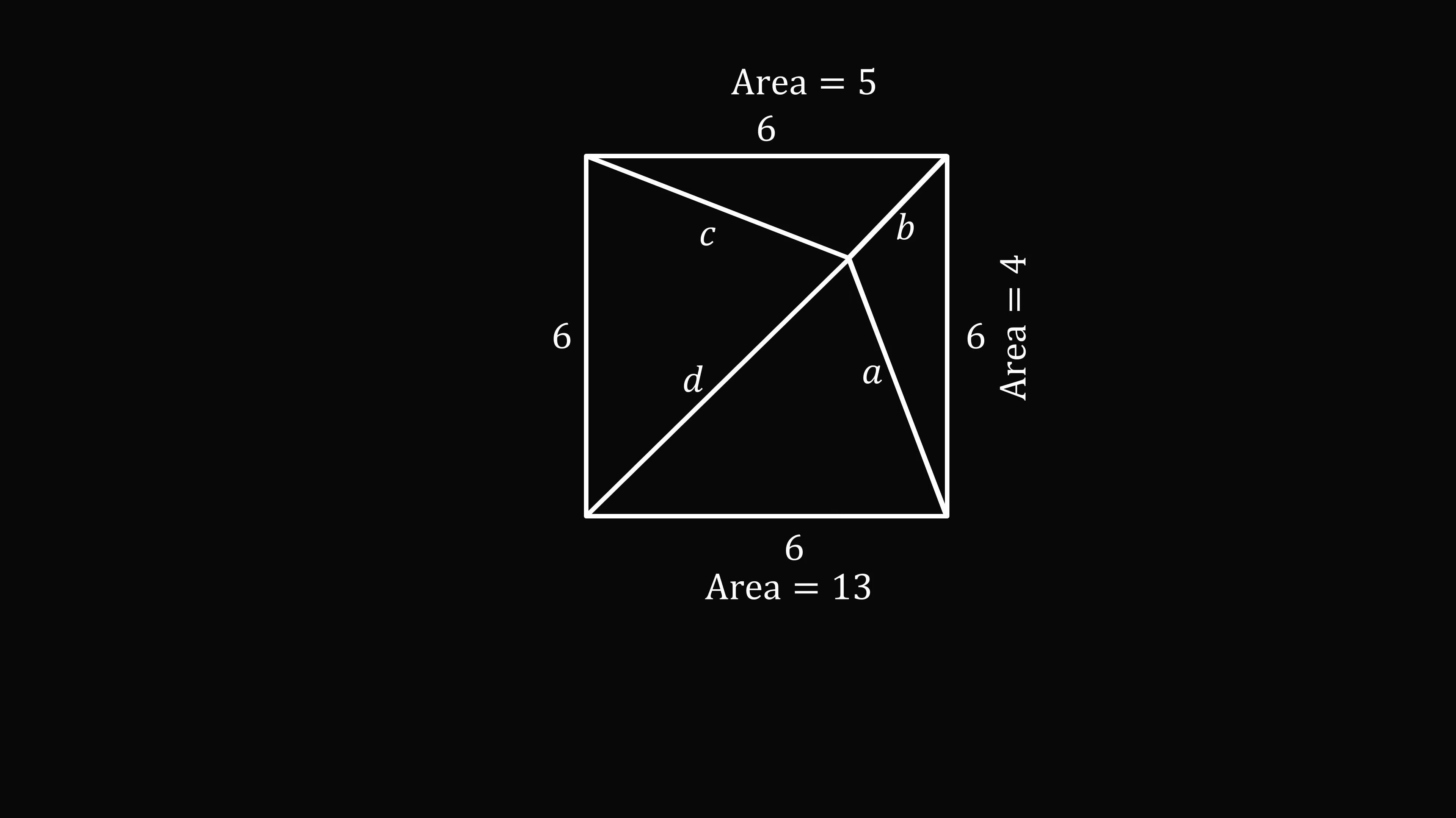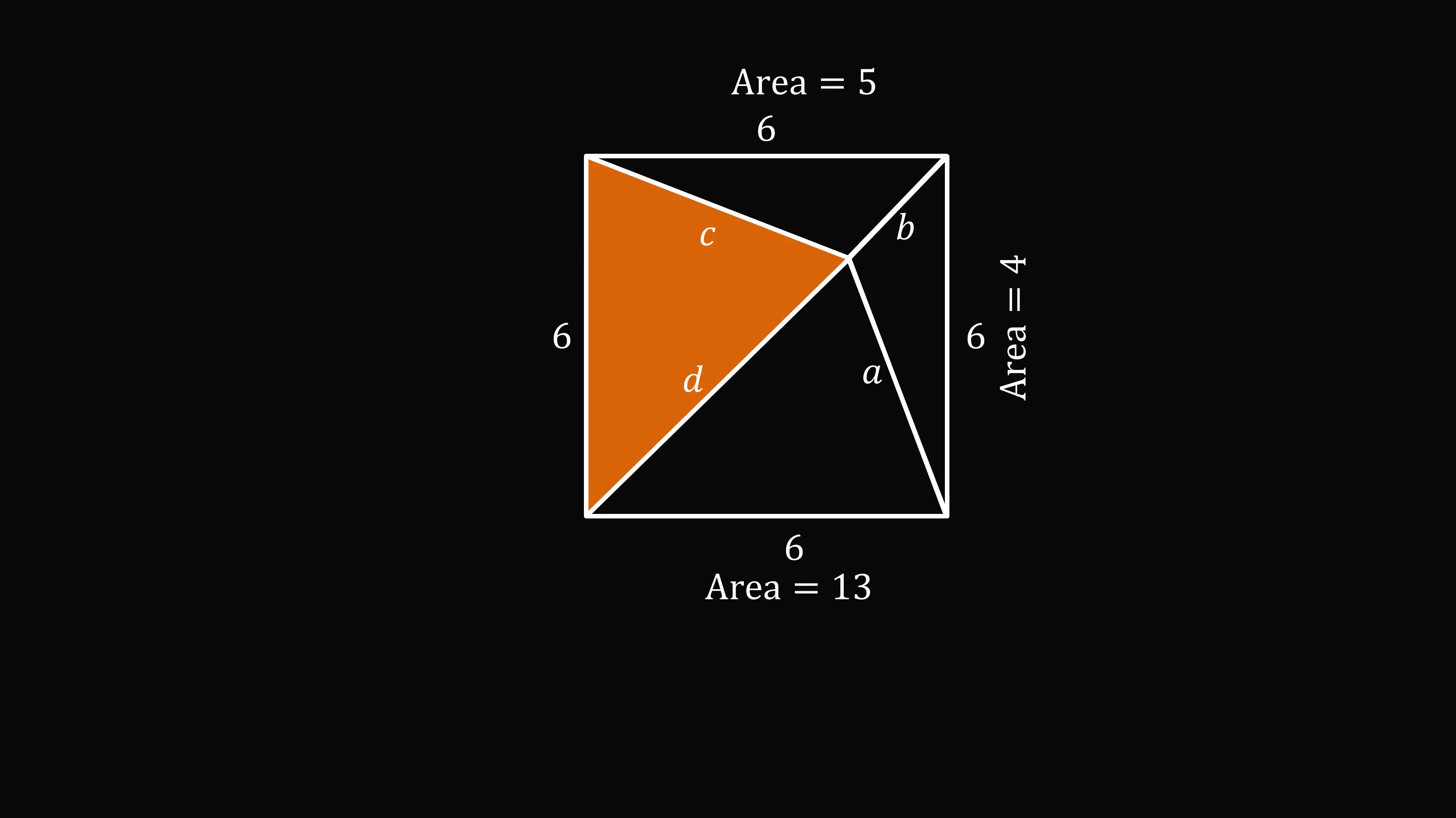So we finally have our triangle here with sides C, D, and 6. Its area will be equal to the area of the square minus the area of the three triangles whose areas we know. This is equal to 6 squared minus 5 minus 4 minus 13, and that gives us the area of the triangle is equal to 14.